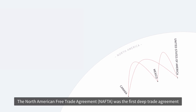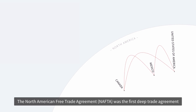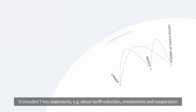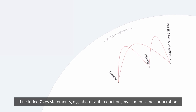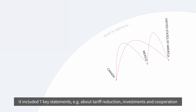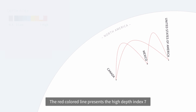The North American Free Trade Agreement was the first deep trade agreement. It included seven key statements about tariff reduction, investments, and cooperation. The red colored line represents the depth index, in this case seven.